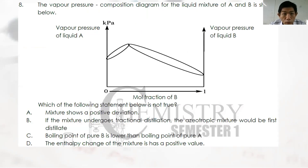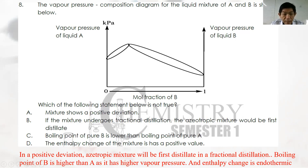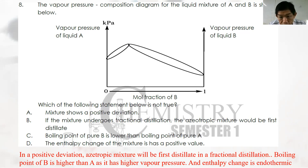Question 8: A vapor pressure composition diagram of A and B is shown, which clearly shows a positive deviation. Statement A — the mixture shows positive deviation — is true. Statement B — azeotropic mixture will be the first distillate in fractional distillation — is true. Statement C — boiling point of pure B is lower than pure A, as seen in the graph — is true. Statement D — enthalpy change of mixing is positive for positive deviation, because intermolecular forces are weaker — is also true. All statements A, B, C, D are correct.